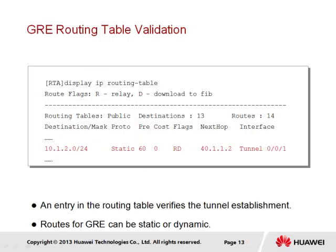We can use the display IP routing table command to determine the forwarding of traffic over the tunnel interface. Traffic destined for the 10.1.2.0/24 network will be forwarded over the tunnel interface with a next hop of 40.1.1.2, which is the tunnel address configured on RTB. If dynamic routing is configured, we will observe specific routes for remote destinations in the routing table as they are advertised over the tunnel interface.